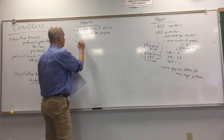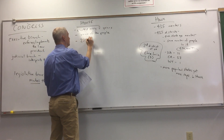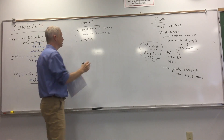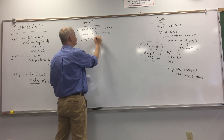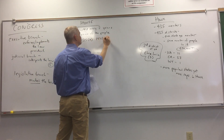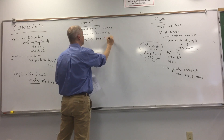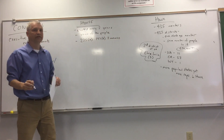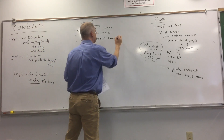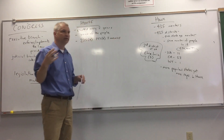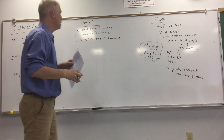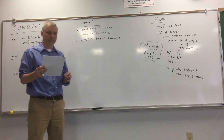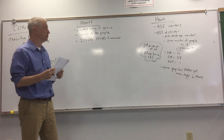Currently, there are 235 Democrats, 197 Republicans, and three vacancies for congresspeople who died, resigned, or for some reason aren't serving anymore. So the Democrats have the majority of members in the House of Representatives.